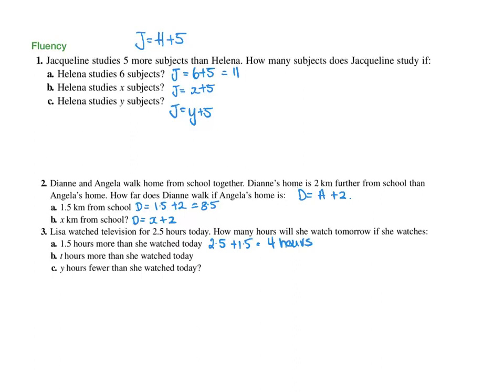If she watches T hours more than she watched today, so that would just be 2.5 plus T. If she watched Y hours fewer than she watched today, so it would be 2.5 minus Y.